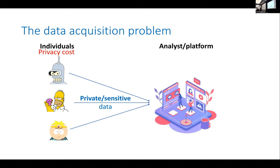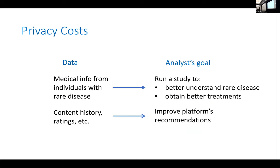One thing that's going to happen is that agents are going to incur privacy costs — privacy losses — for actually joining a study, joining a platform, or sharing their data in some sense. Let me give you an example of what's going on here.